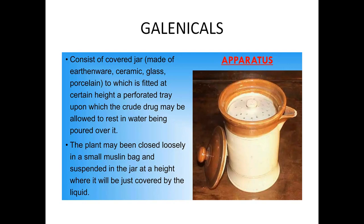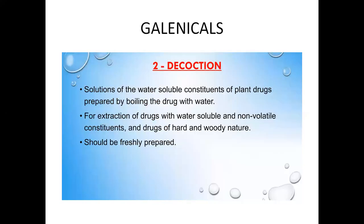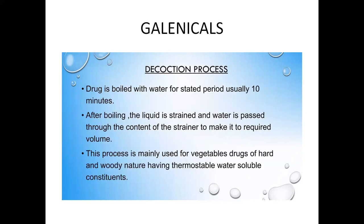Decoction is similar to making tea — the constituents of plant drugs are boiled with water. Non-volatile medicinal constituents are extracted through this boiling. This process is mainly used for drugs of a hard and woody nature. The drug is boiled with water for 10 minutes, after which the liquid is strained through a strainer.